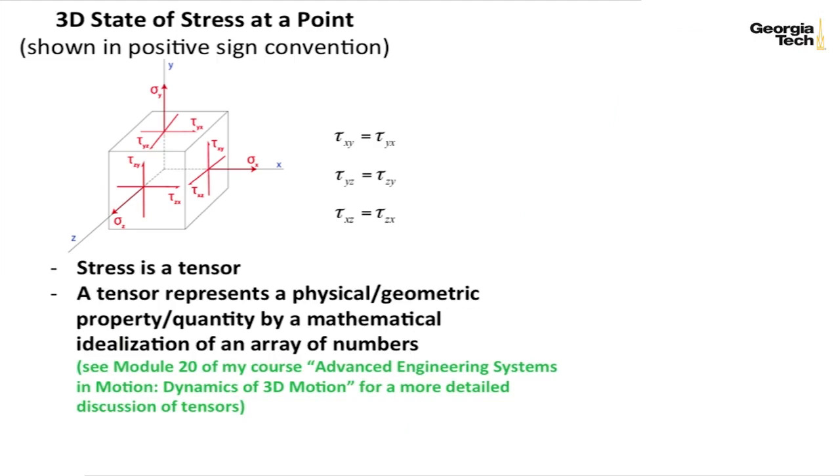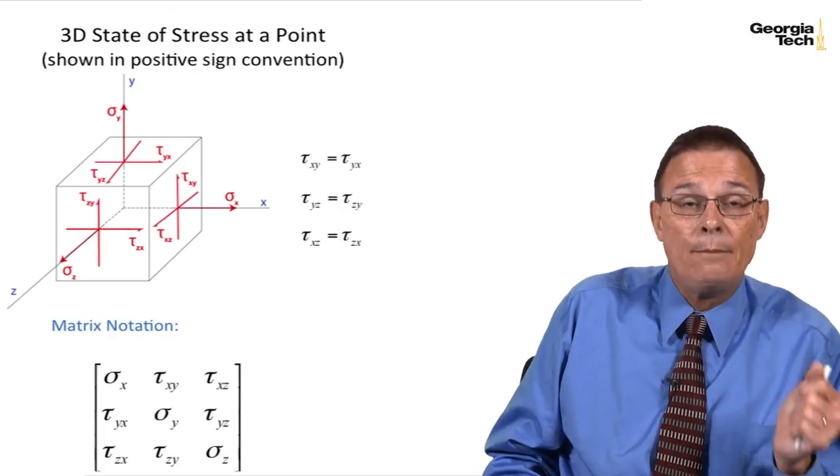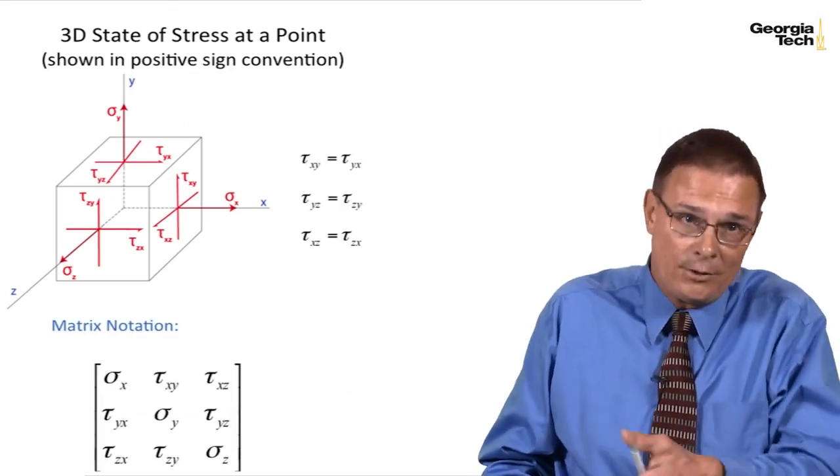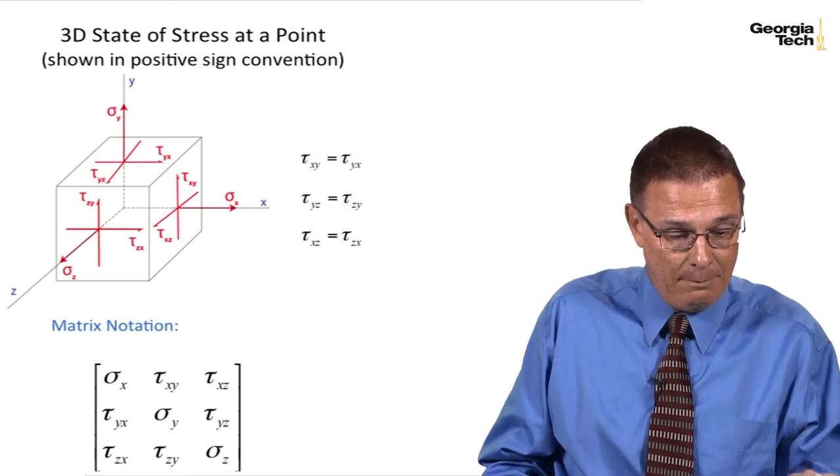And as I said before, a tensor represents a physical or geometric property or quantity by a mathematical idealization of an array of numbers. And you can look back to my earlier course, Advanced Engineering Systems in Motion or Dynamics of 3D Motion Module 20. I discussed tensors there.